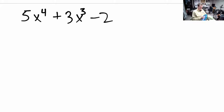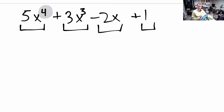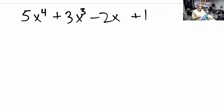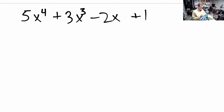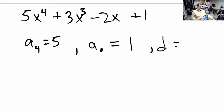Let's look at a quick example: 5x to the 4th plus 3x cubed minus 2x plus 1. This is a 4th degree polynomial — that's the highest degree — written in standard form with the highest degree term first, decreasing. There are 4 terms. You'll notice x squared is missing; that's okay — there's essentially a plus 0x squared here, so a sub 2 is 0. The leading coefficient is 5, the constant is 1, and the degree is 4.